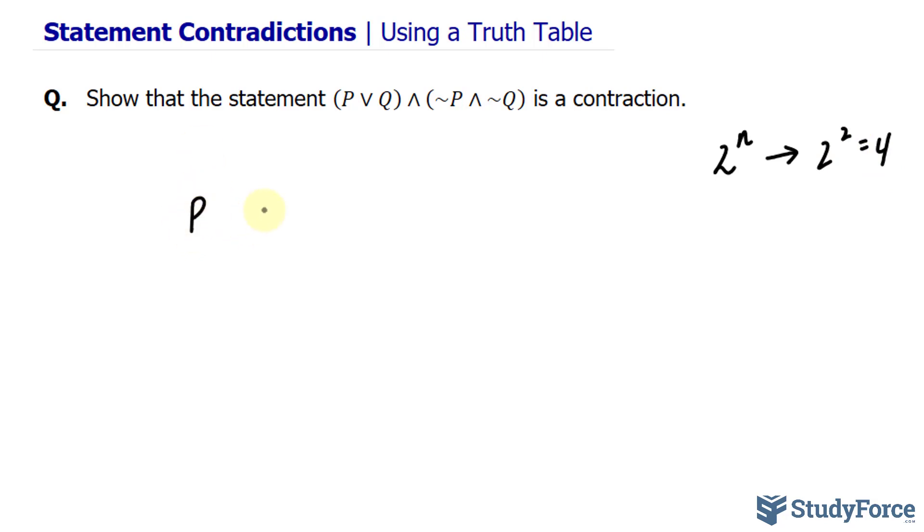I'll write down p and q for the first two columns in our truth table, and the four possibilities are true, true, true, false, false, true, and false, false.